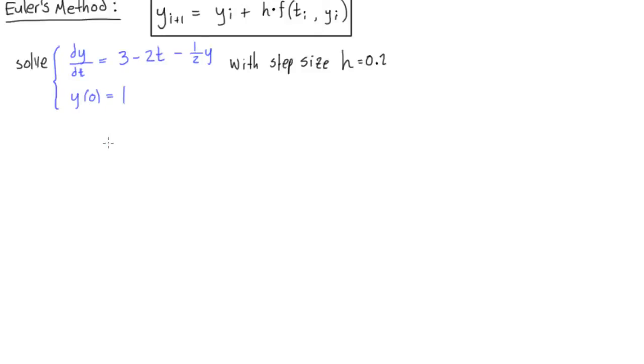So last video we went over how to use Euler's method, and now in this video we're going to do this example. We want to solve this differential equation, it's an initial value problem, using Euler's method with a step size of h equals 0.2.